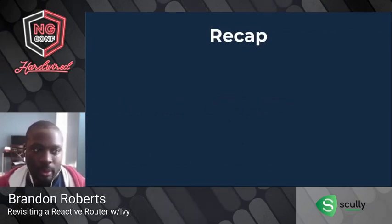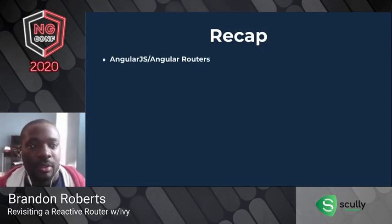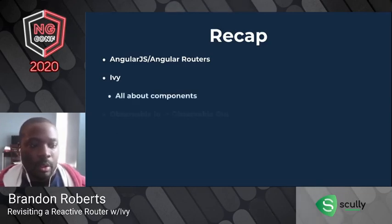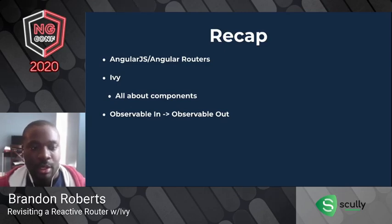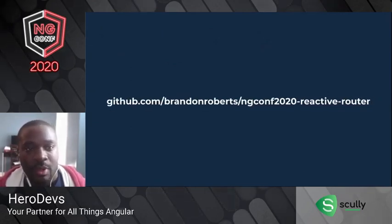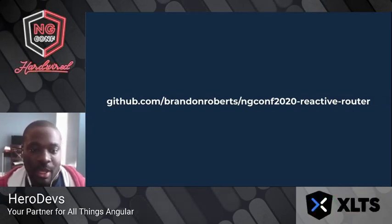To recap, we talked about AngularJS routers and Angular routers, talked about what Ivy is and how Ivy enables the dream of getting back to just components for routing, talked about what being reactive means — observable in and observable out — and covered the idea of what a declarative reactive router could look like. If you'd like to see a demo of what I discussed here, visit the GitHub repo and try it out. I'm really interested in getting more feedback on this because I'd like to see this become a real thing.